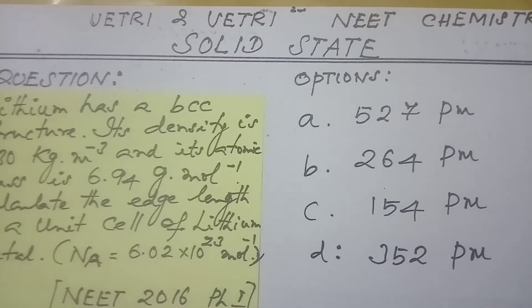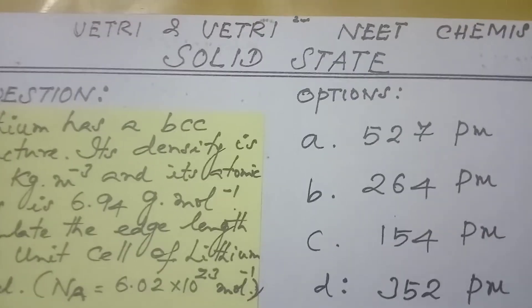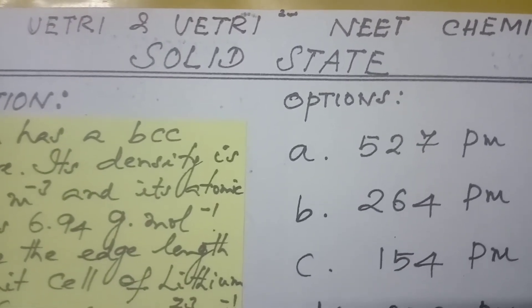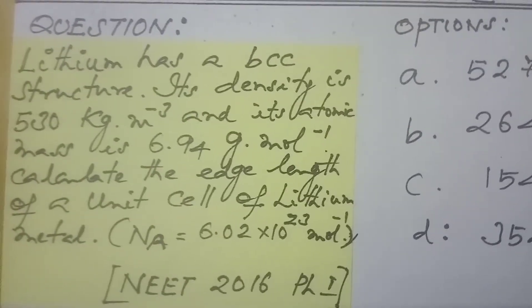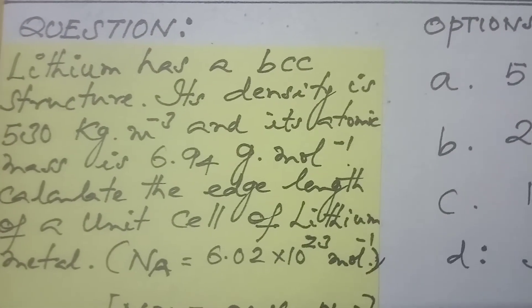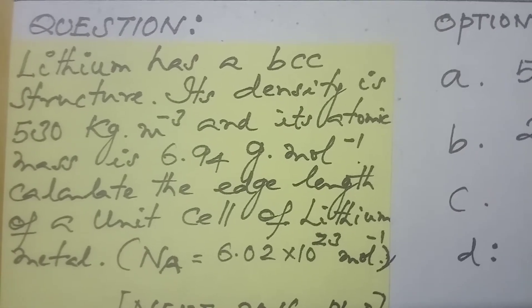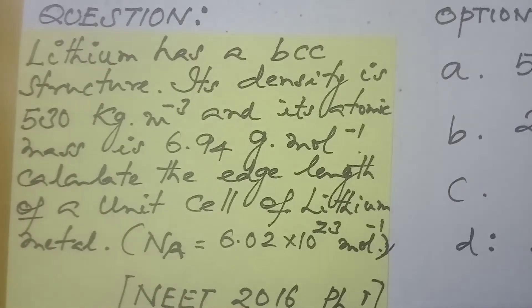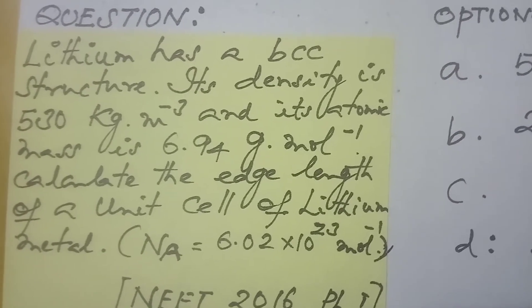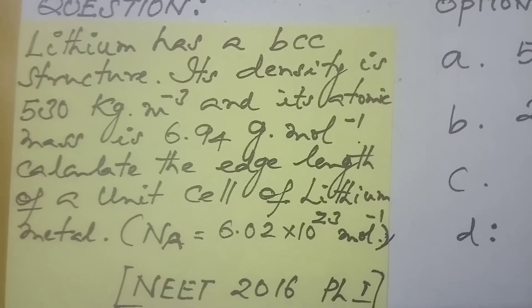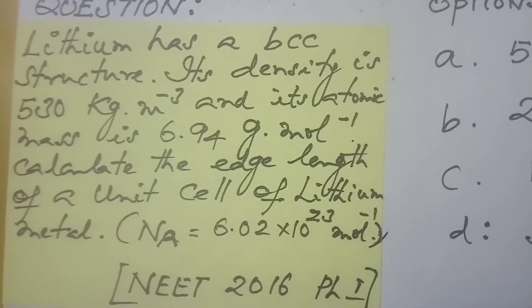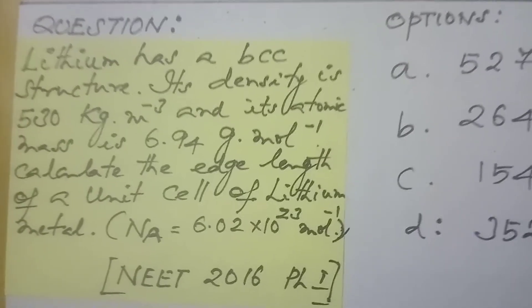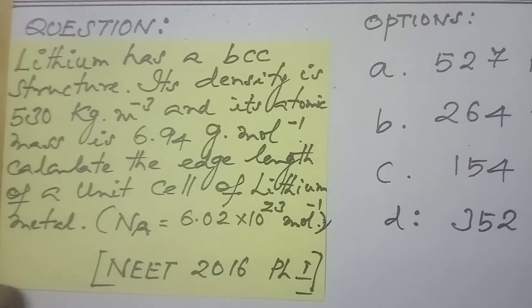Good morning students. I am Vettri Chalvi from Vettri and Vettri Neat Chemistry. Today I am going to give the video from the lesson of Solid State. Now let us see the question. Lithium has a BCC structure. Its density is 530 kilogram per meter cube and its atomic mass is 6.94 gram per mole. Calculate the edge length of a unit cell of lithium metal. Avogadro's number is 6.02×10²³ per mole. This is from NEET 2016 Phase 1.